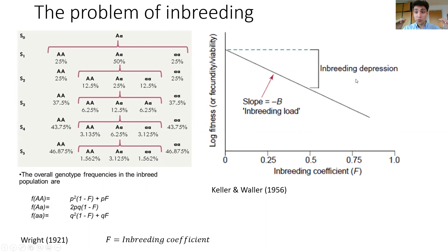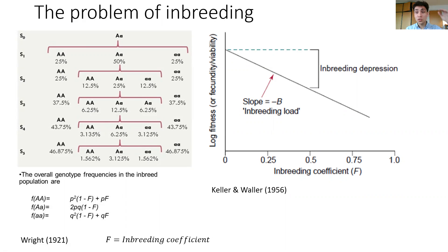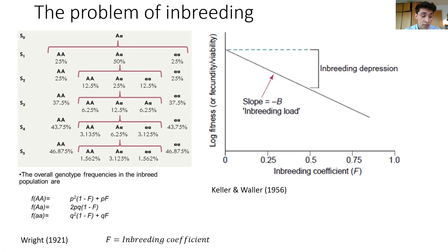This comes about because decreased heterozygosity by definition means increased homozygosity. And increased homozygosity means that deleterious recessive alleles are much, much more expressed. It also means that you lose genetic diversity at loci with overdominance, and that decreases fitness. So that gives rise to this decrease in fitness that you typically see in inbred populations.